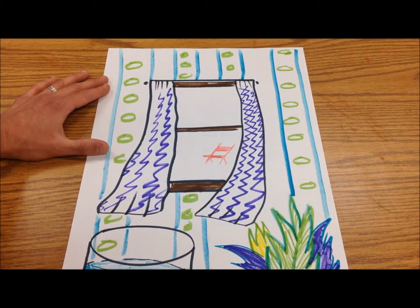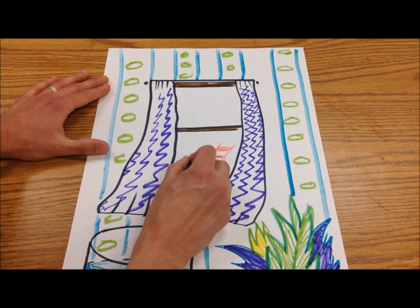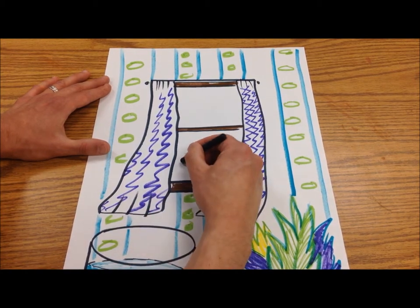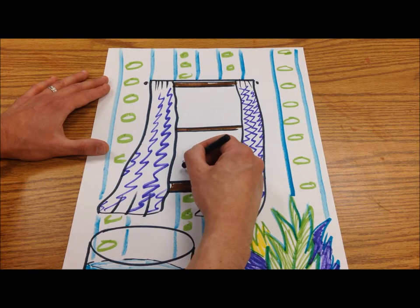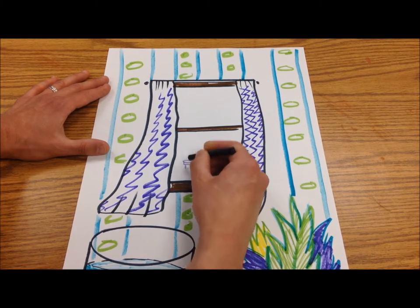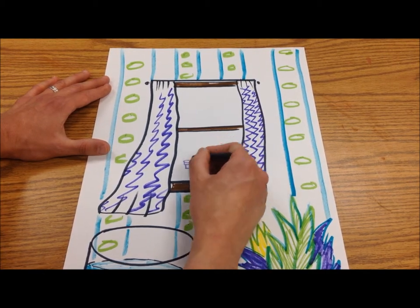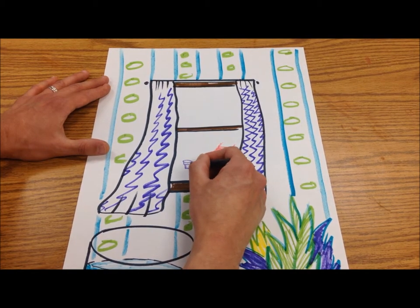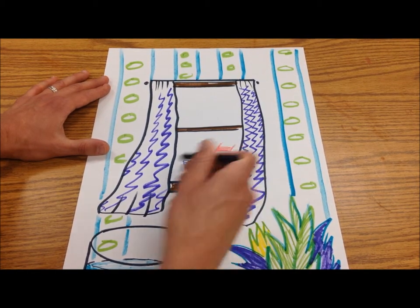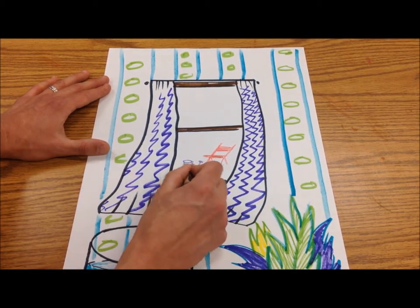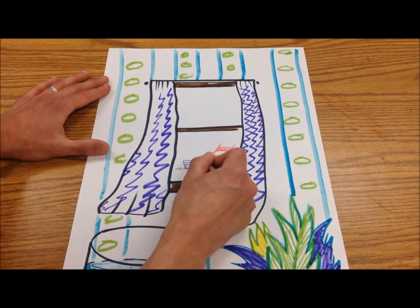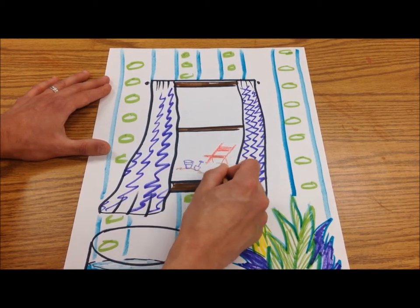And then I think I'm going to draw a little sand pail here, and a spade, stuck in a little mound of sand. So that would be the elements in the foreground.